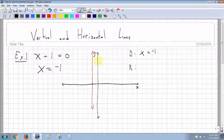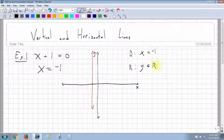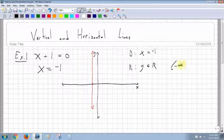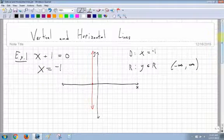My range is all my possible y values, and because it covers everything up and down, all my possible y values are y is an element of all real numbers, or everything, or negative infinity to infinity.